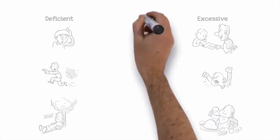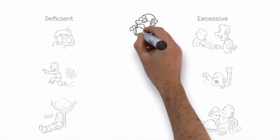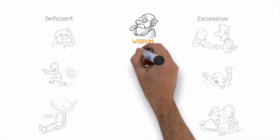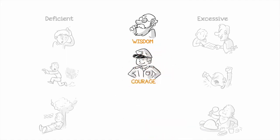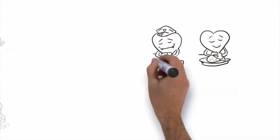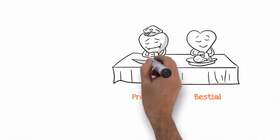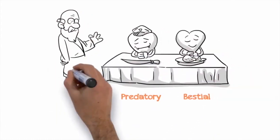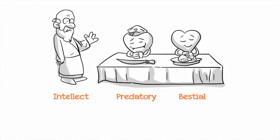When the attributes are balanced, the rational leads to wisdom, the predatory to courage, and the bestial to restraint. Finally, when the predatory and bestial attributes are set under the command of the intellect, it leads to the fourth virtue.